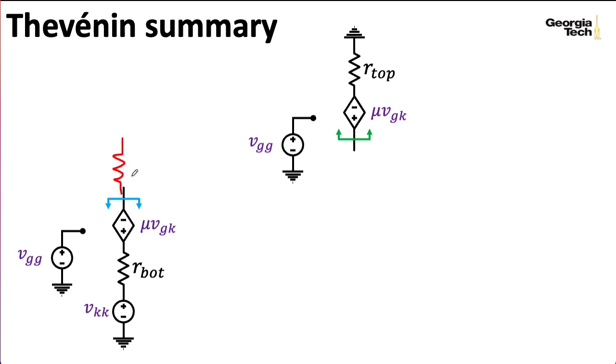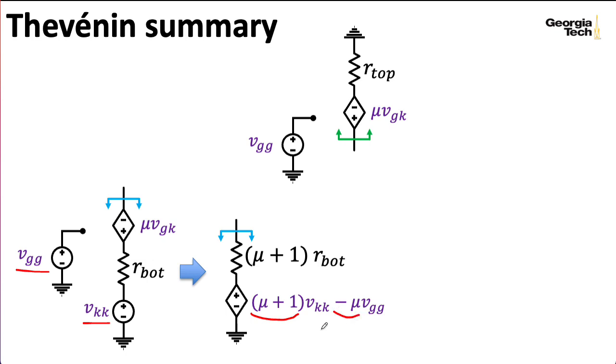In particular, I'm going to make extensive use of the Thevenin equivalents we developed. We developed Thevenin equivalents looking into the negative and positive terminals of the voltage-controlled voltage source that forms the core of the triode model. Recall that looking into the negative terminal, we can imagine that what we see from the grid or the cathode manifests as either a multiplication by mu plus 1 or a multiplication by minus mu for the cathode and the grid voltages, respectively. And we wind up multiplying the resistance seen on the other side of the VCVS by mu plus 1. Don't run away. Stick with me.